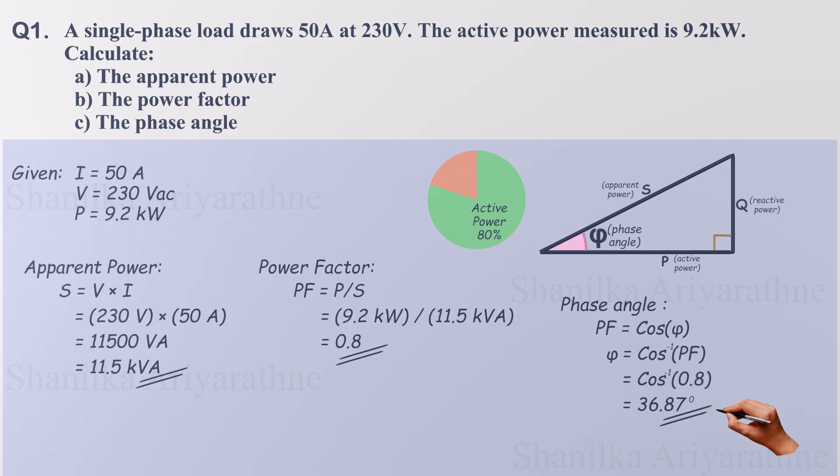What does all this mean for our facility? While a power factor of 0.8 isn't terrible, it suggests there's definite room for improvement. By implementing power factor correction, we could bring this value closer to 1.0, reducing our apparent power draw and ultimately lowering electricity costs.